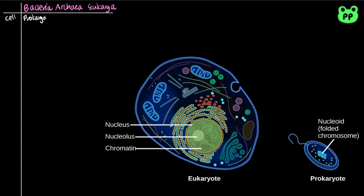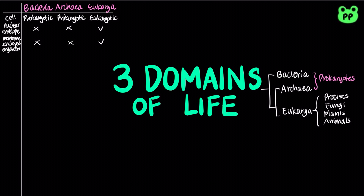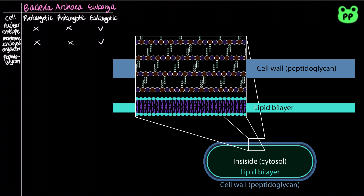Bacteria and archaea are prokaryotes that lack a nucleus, whereas eukaryotes have a nucleus enclosed in a nuclear envelope. Prokaryotes also lack membrane-enclosed organelles that are found in eukaryotes. However, only bacteria have peptidoglycan in their cell walls.